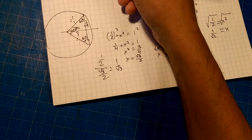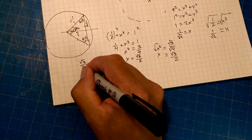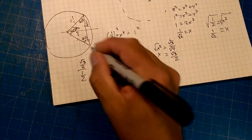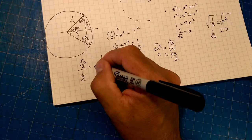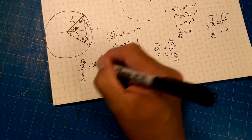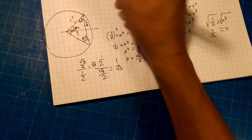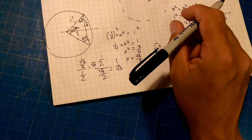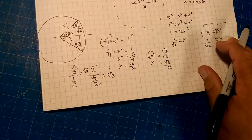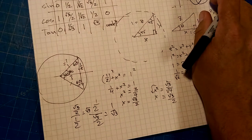And then, tan is root 3 over 2 divided by 1 half. Invert and multiply, so that's equal to root 3. And I think that fills out our table.